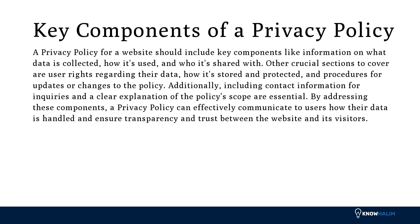Key Components of a Privacy Policy: A privacy policy for a website should include information on what data is collected, how it's used, and who it's shared with. Other crucial sections cover user rights regarding their data, how it's stored and protected, and procedures for updates or changes to the policy. Additionally, including contact information for inquiries and a clear explanation of the policy's scope are essential. By addressing these components, a privacy policy can effectively communicate how data is handled and ensure transparency and trust between the website and its visitors.